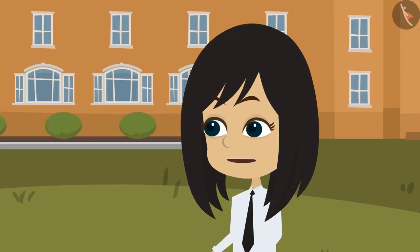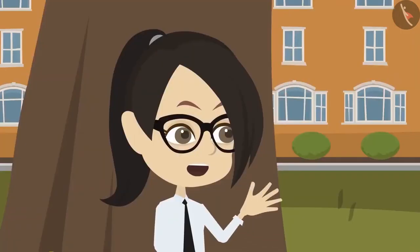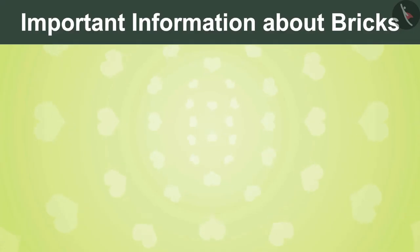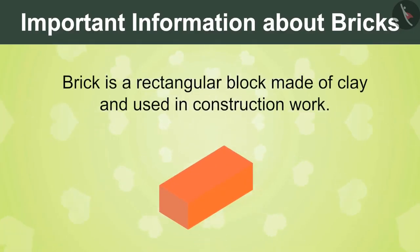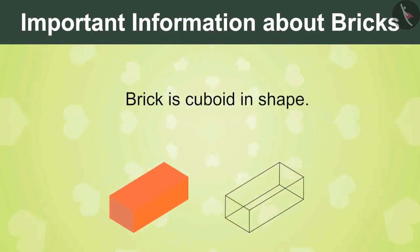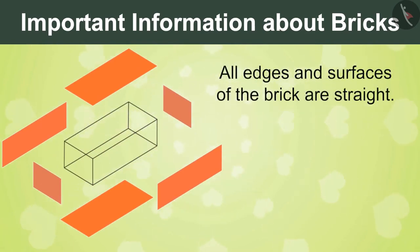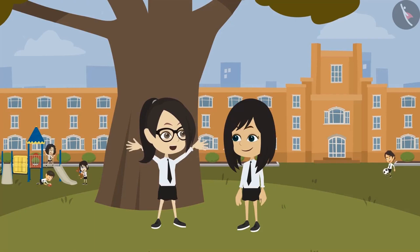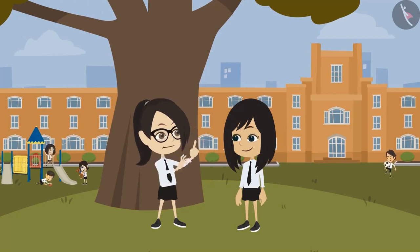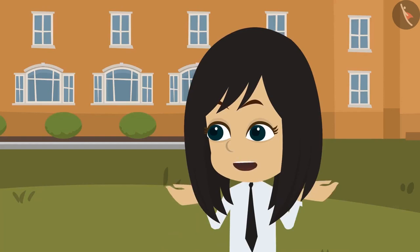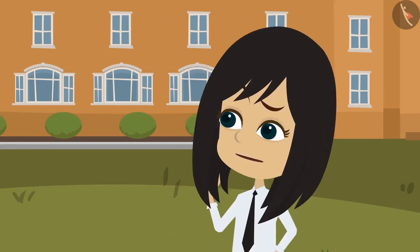Someday let us make beautiful designs with bricks. Neha says: I know all information about bricks now. Brick is made by baking clay and is used for construction work. Brick is in the shape of a cuboid and has 6 surfaces and 12 edges. All the edges and surfaces of the brick are straight. But I think the real fun would be to make something with them. Vandana, where can I learn more about the uses of bricks? I would like to know more.